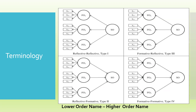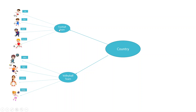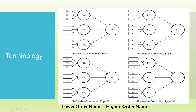Now depending upon the relationship, there can exist four types of model. Remember the terminology — it will always start from the lower order and then the higher order. If the arrows are going out of the construct it is considered reflective. So if the lower order is reflective and the higher order arrows are also moving out, it is a reflective-reflective model. If in type 2 the lower order arrows are moving out but in the higher order the arrows are going in, it is a reflective-formative model.